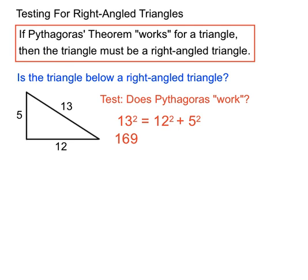13 squared is 169, 12 squared is 144, and 5 squared is 25.